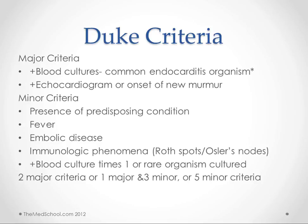If you only have one of those major criteria, then you need one of these minor criteria, which include presence of a predisposing condition — which might include rheumatic fever or some other valvular disease — fever, embolic disease, immunologic phenomena like the Roth spots or Osler's nodes we showed, and just any positive blood culture or a blood culture with a rare organism. So if you only have one major criteria, then you need three of these minor criteria.